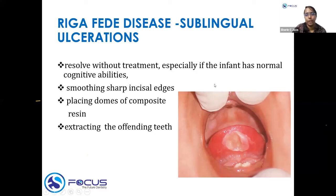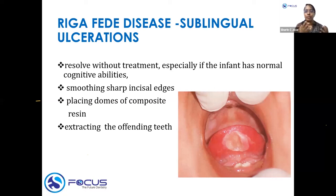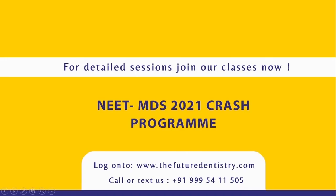To summarize natal and neonatal teeth: know the incidence, the tooth most commonly involved, the associated syndromes, how to manage a natal tooth, the waiting period prior to extraction, the dosage of vitamin K to administer, and the presentation of Riga-Fede disease. These are the key points you need to know about natal and neonatal teeth.